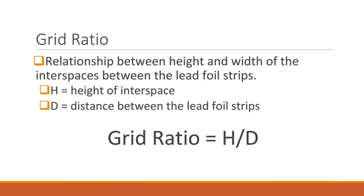Grid ratio is the best way to determine a grid's efficiency. The relationship between height and width of the inner spaces between the lead foil strips determines how much scatter radiation is able to pass through the grid. You need to memorize that grid ratio equals H over D, where H is the height of the inner space and D is the width of the inner space, also stated as the distance between the lead strips.